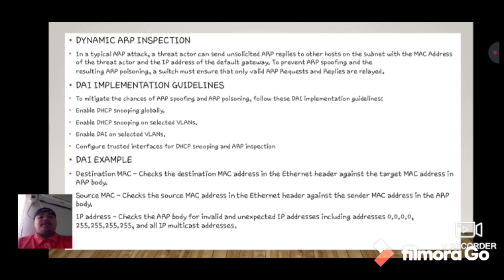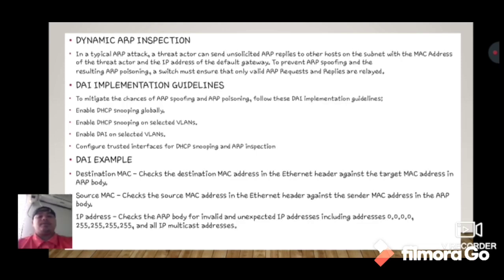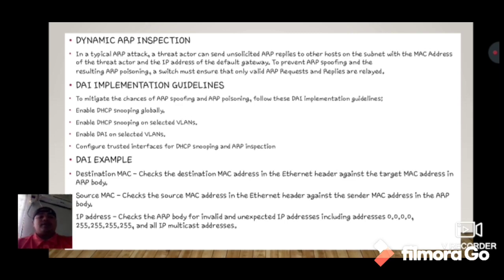DAI implementation guidelines. To mitigate the chances of ARP spoofing and ARP poisoning, follow these guidelines: enable DHCP snooping globally, enable DHCP snooping on selected VLANs, and configure trusted interfaces for both DHCP snooping and ARP inspection.